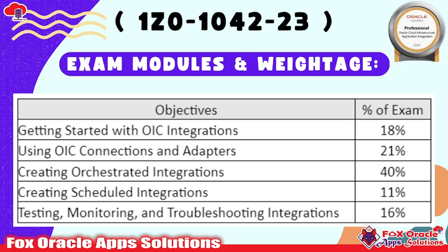In OIC there are a total of five modules defined, each with their own weightage. Module 1 covers the basics of OIC — what OIC is, all connectivities — and has a weightage of 18%. Module 2 is 'Using OIC Connections and Adapters' at 21%. Module 3 is 'Creating Orchestration Integration' at 40%. Module 4 is 'Creating Scheduled Integration' at 11%. Module 5 is 'Testing, Monitoring and Troubleshooting Integration' at 16%.